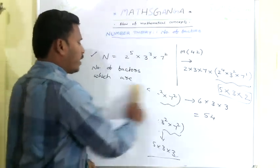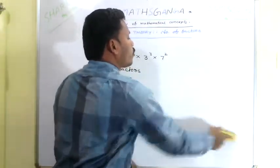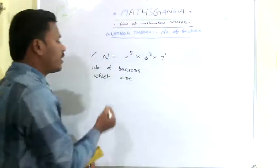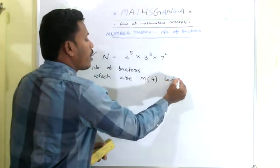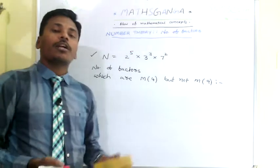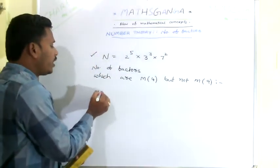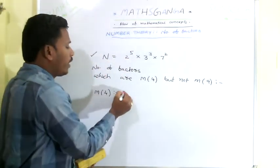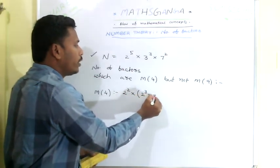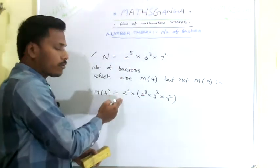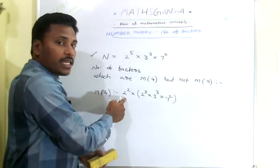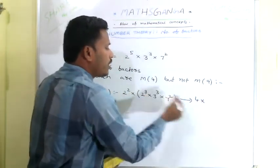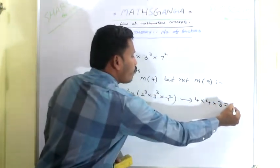If anybody asks you to count the number of factors which are multiples of 4 but not multiples of 9 — among the 72 factors — first count the factors which are multiples of 4. Since factors are multiples of 4 = 2^2, separate 2^2 from the number: 2^2 × 2^3 × 3^3 × 7^2. The remaining is 2^3 × 3^3 × 7^2. Number of factors: (3+1)(3+1)(2+1) = 4 × 4 × 3 = 48. So there are 48 factors which are multiples of 4.